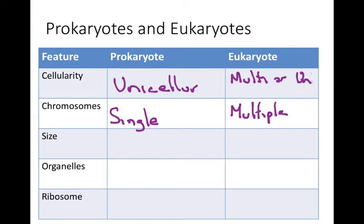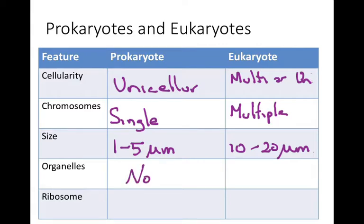Prokaryotes are small, on the range of about one to five micrometers. Eukaryotes, on the other hand, are typically larger — we use human cells as the range there. Prokaryotes do not have membrane-bound organelles, but they do have ribosomes, which is something they share in common with eukaryotes. Eukaryotes do have membrane-bound organelles, which is one thing that differentiates these two classes from each other.